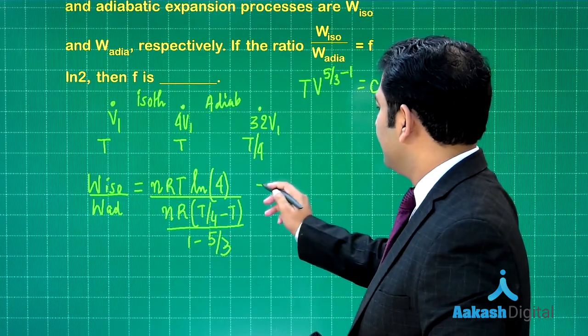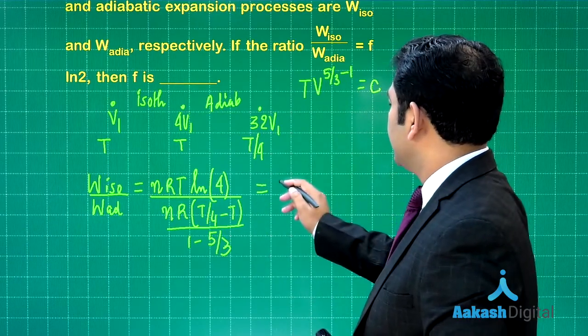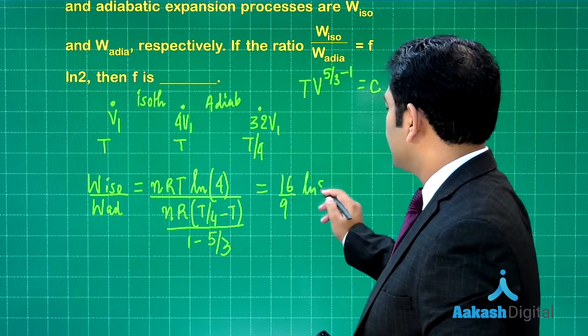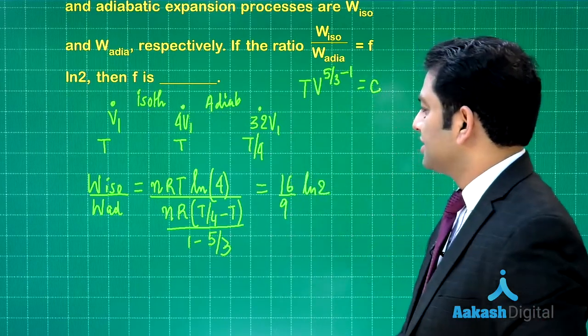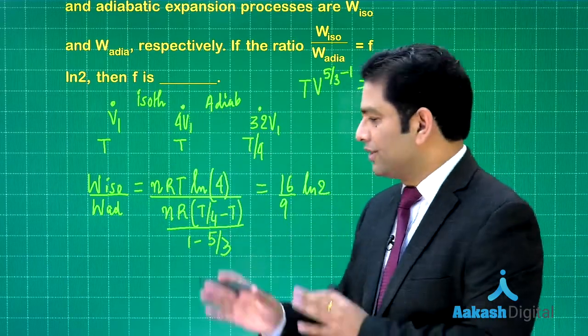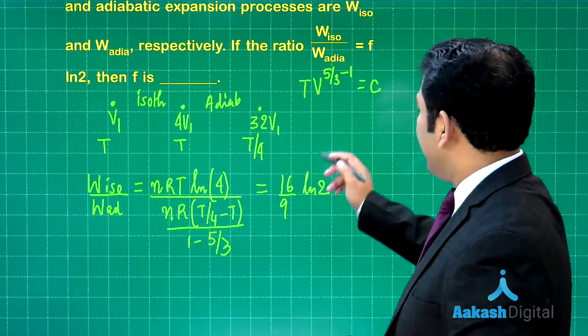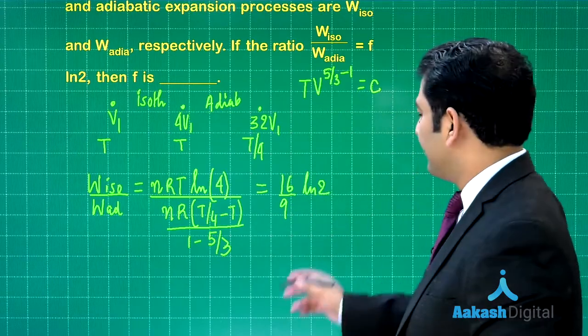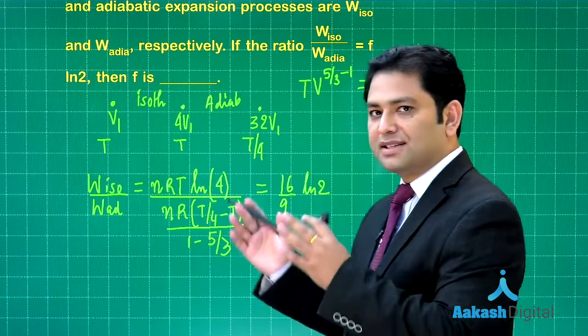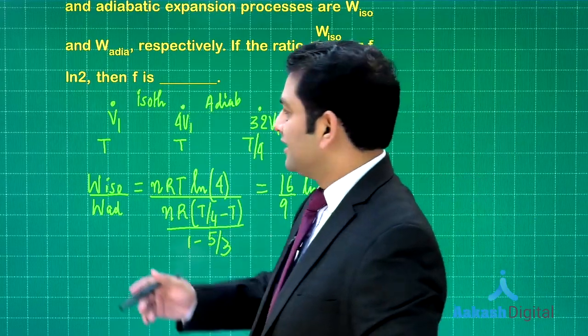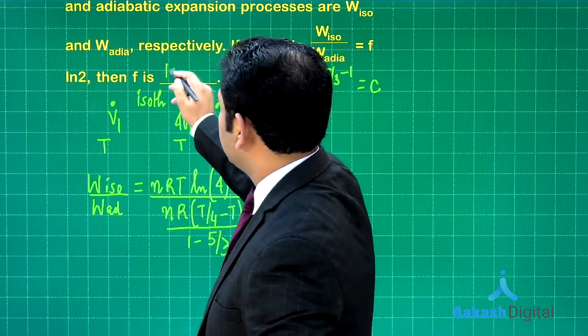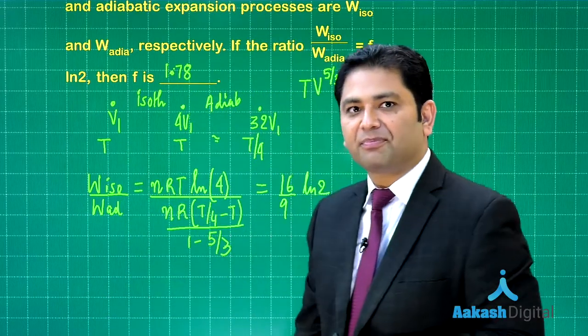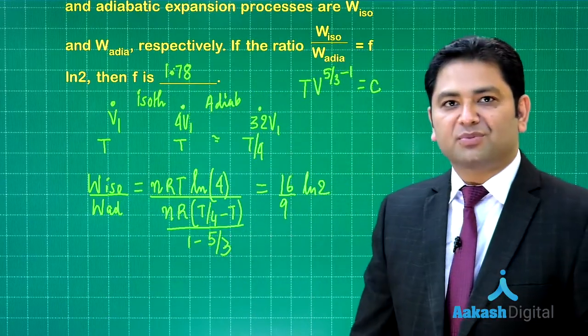When you do the division, this value comes out to be 16/9 natural log 2, which is a simple calculation. Log 4 will be 2 natural log 2. So f is the coefficient of natural log 2. The value of f is 16/9, but since we need to truncate it to 2 digits after decimal, that's going to be 1.78.